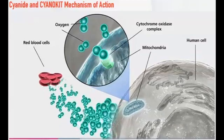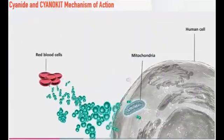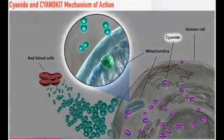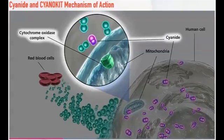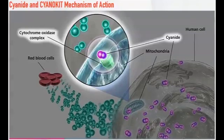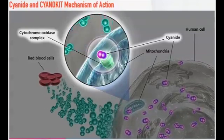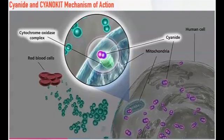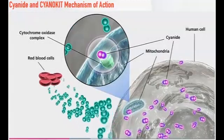So what happens when cyanide enters the body? When cyanide reaches cells, it prevents them from being able to use oxygen. It does this by binding with cytochrome A3, a subunit of the cytochrome oxidase complex. Inability to use oxygen forces anaerobic metabolism, which results in the production of lactic acid, clinically manifested as metabolic acidosis. When tissue cells cannot utilize oxygen, cells cannot function properly and may begin to die.